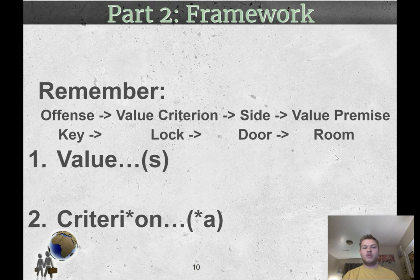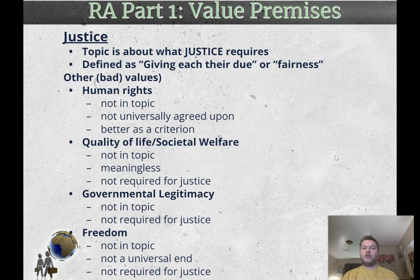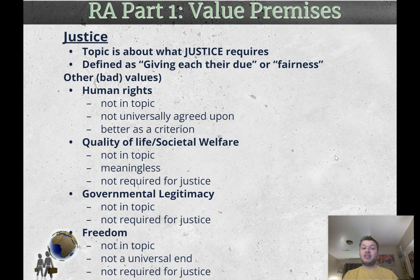Justice is going to be the most common and correct value on this topic because the topic is about what justice itself requires. It can be defined as giving each their due, also shorthanded as fairness. How can you determine what justice requires through a value that is not justice? Other values people might try to read include human rights — but that's not in the topic and not universally agreed upon, so it serves better as a criterion than as its own value. Quality of life and societal welfare are basically too broad to be meaningful. Governmental legitimacy is also not mentioned in the topic.